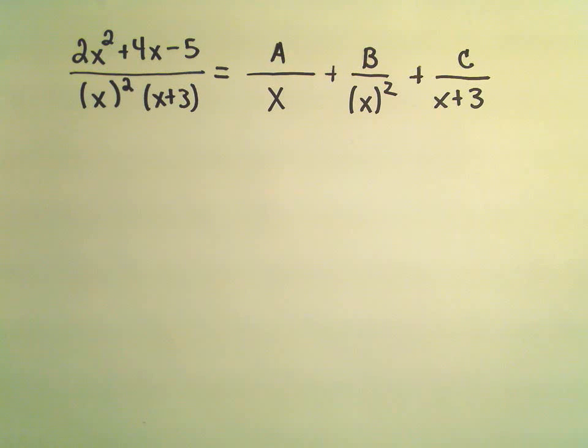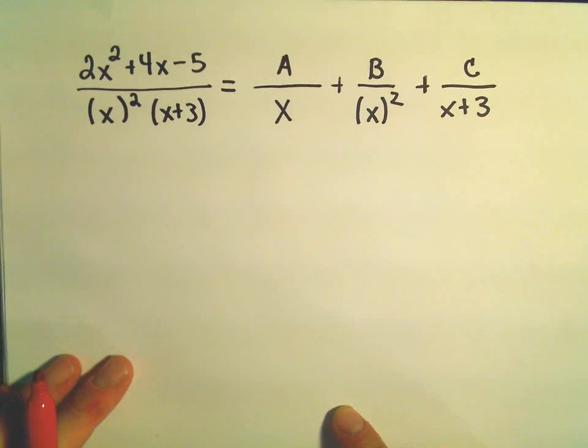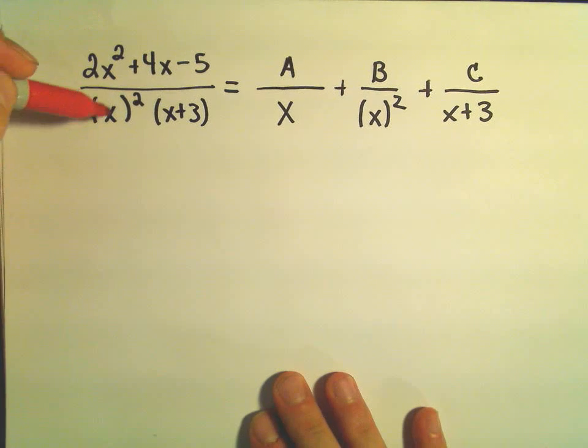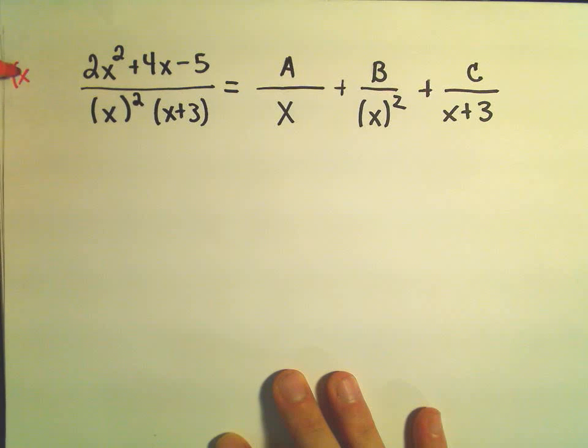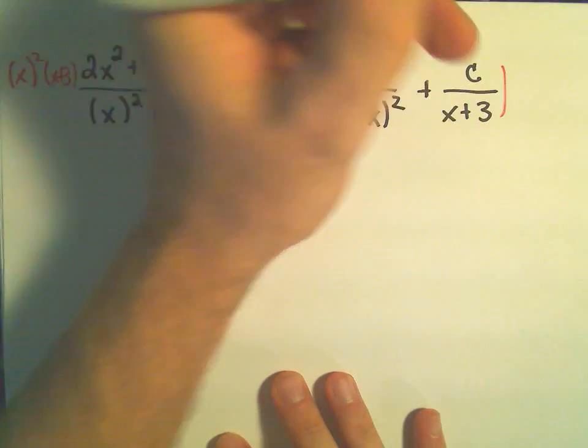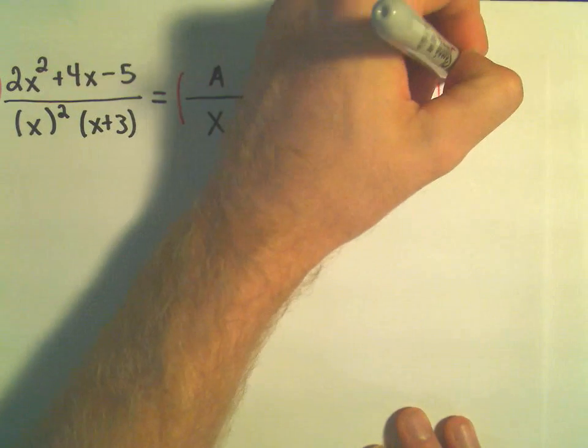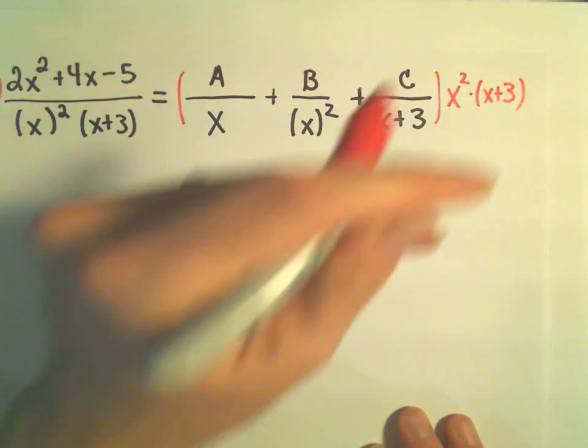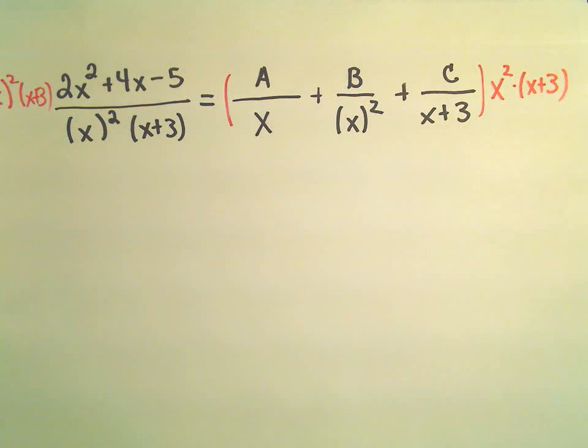But now I'm going to do the same thing as in the other examples. I'm going to get rid of my denominator, all the denominators, by basically multiplying both sides by x squared times x plus 3. So, if we do it on the left, hey, we're certainly going to have to do it on the right.